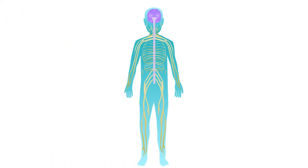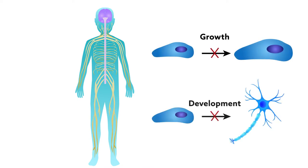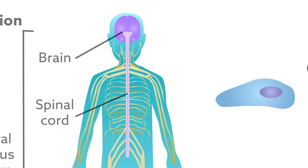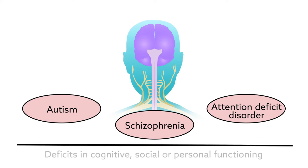Neurodevelopmental disorders present early in life and are caused by impairments of growth, development and function of the brain and central nervous system. With conditions including autism, attention deficit disorder and schizophrenia, these disorders are characterised by deficits in cognitive, social or personal functioning.